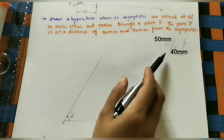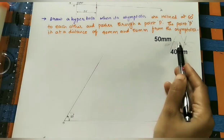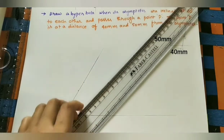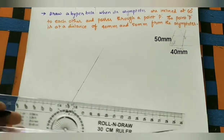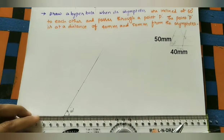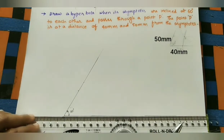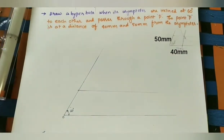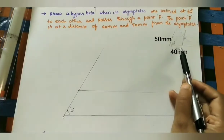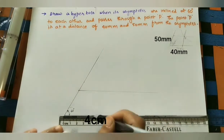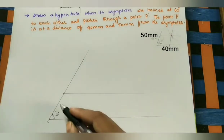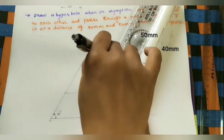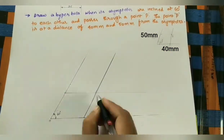Now mark the P point. P is 5cm from one asymptote and 4cm from the other. Take 5cm on one axis and draw a parallel line there using a roller scale. Then from O take 4cm and draw a line parallel to the other asymptote. The intersection point is the P point.